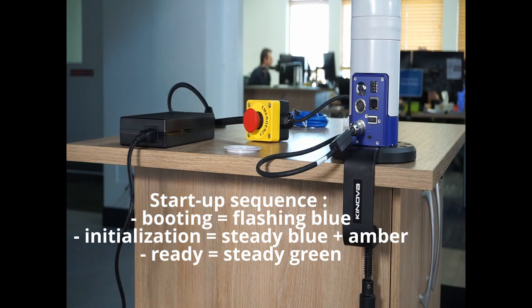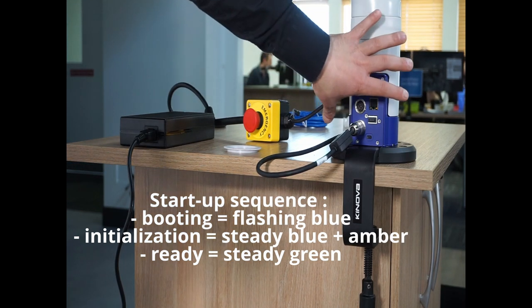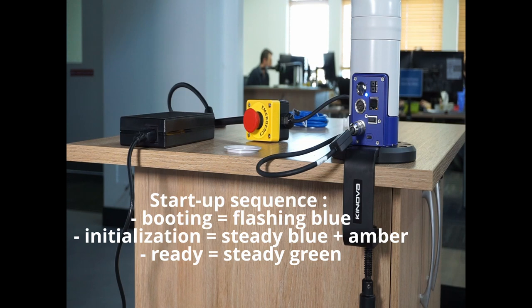First, during booting, the LED will flash blue. Then, during the initialization process, the LED will be blue and the second LED will be orange. Finally, when your robot is ready, the LED will be green.